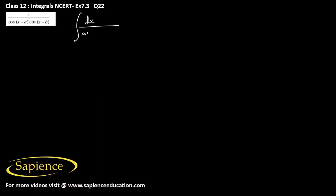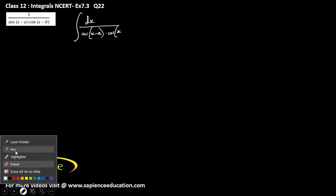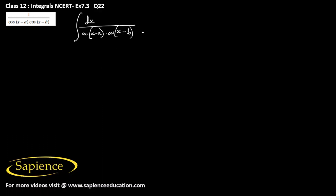We have been asked to integrate dx divided by cos(x minus a) into cos(x minus b). Now we can multiply and divide this expression by sin(b minus a).